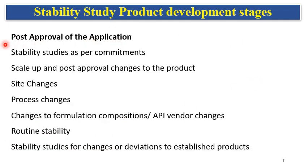On post-approval of the application, once the product is approved, stability studies are still required as per the commitments given by the applicant to the regulatory authorities. Whenever there are scale-up and post-approval changes — such as process changes, formulation composition changes, API vendor changes, or manufacturing site changes — stability studies are required. Routine manufacturing also requires routine stability testing, where some samples are taken from batches and loaded on stability. Stability studies are also performed whenever there are changes or deviations to the established products and procedures.